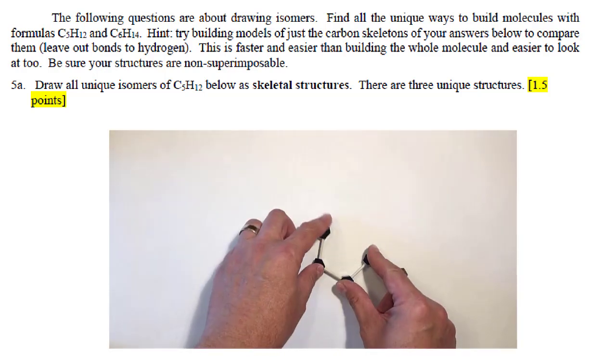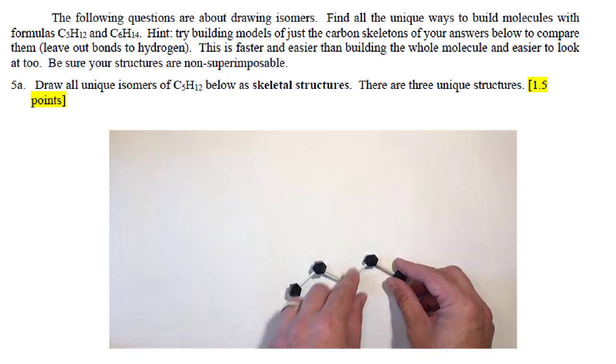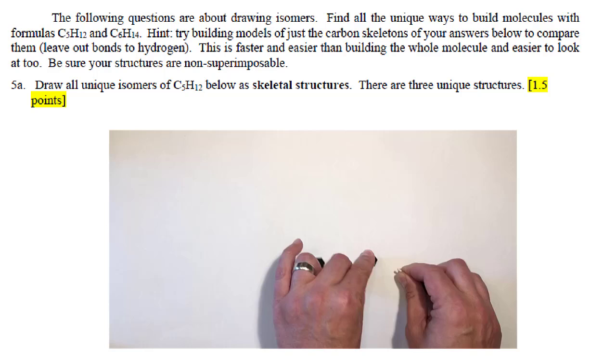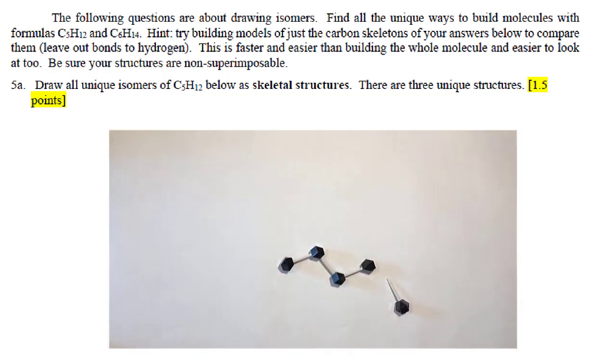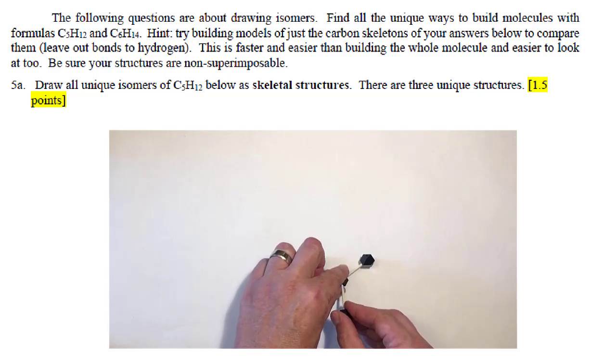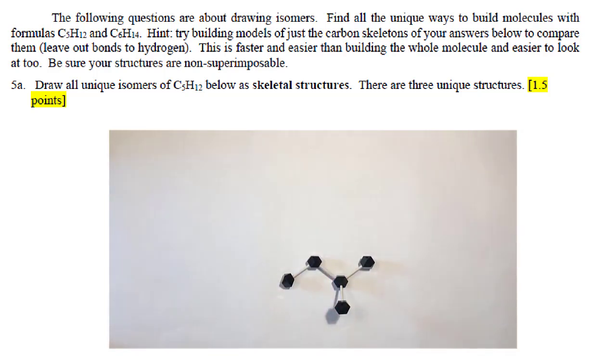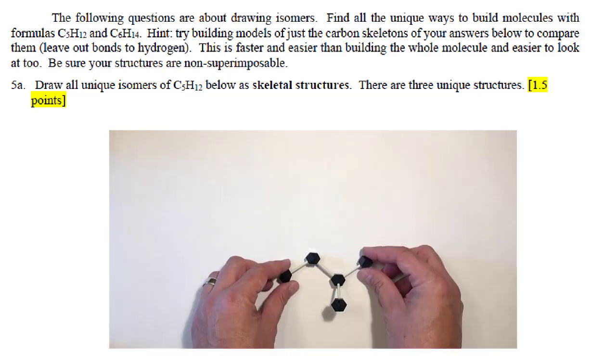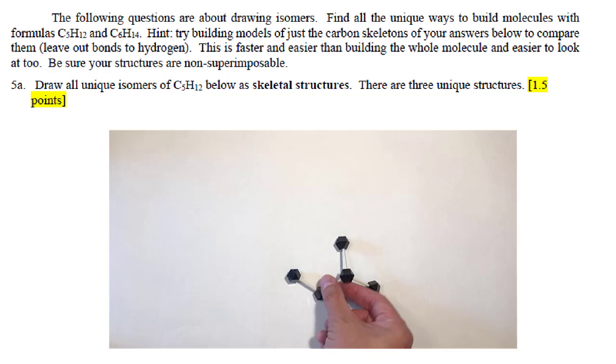To find a unique structure, you're going to have to explore different connectivities for these carbons. You're going to have to pull a carbon off the end and find a different place to put it. If you put this carbon in the middle of the chain someplace, now we have one branch. We have a four-carbon chain with a branch in the middle. That can be rotated into several different conformations that look slightly different, but really represent the same molecule.